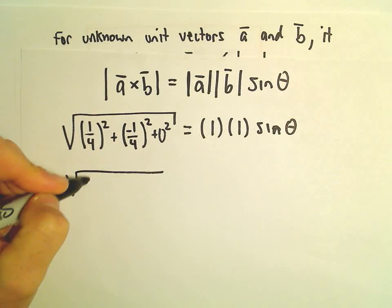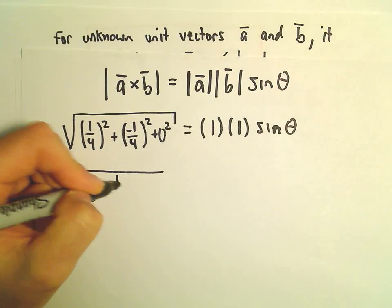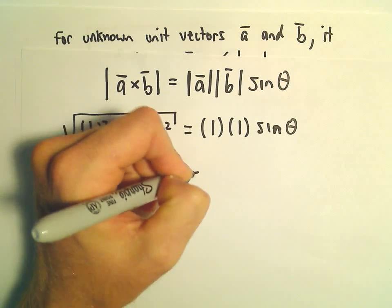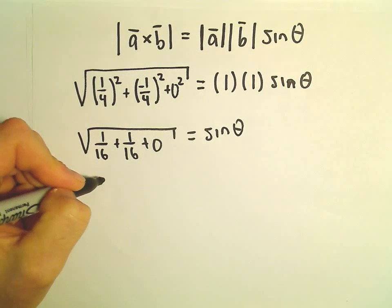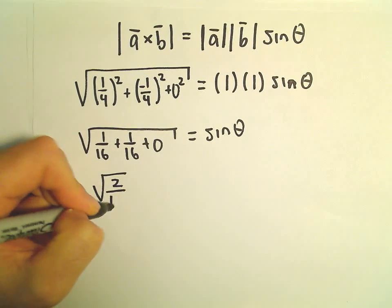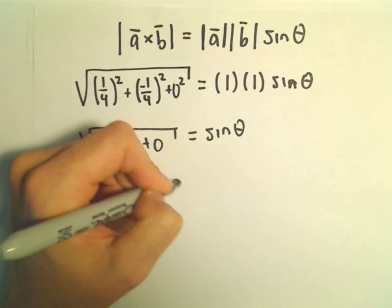Underneath the square root, we would have one over sixteen plus one over sixteen plus zero. That's going to equal sine of theta. That's going to give us the square root of two over sixteen equals sine theta.